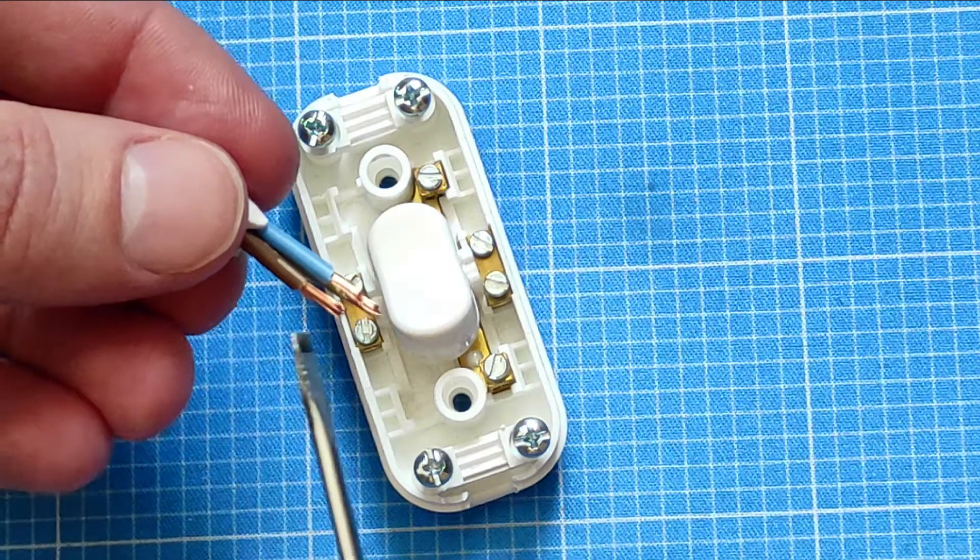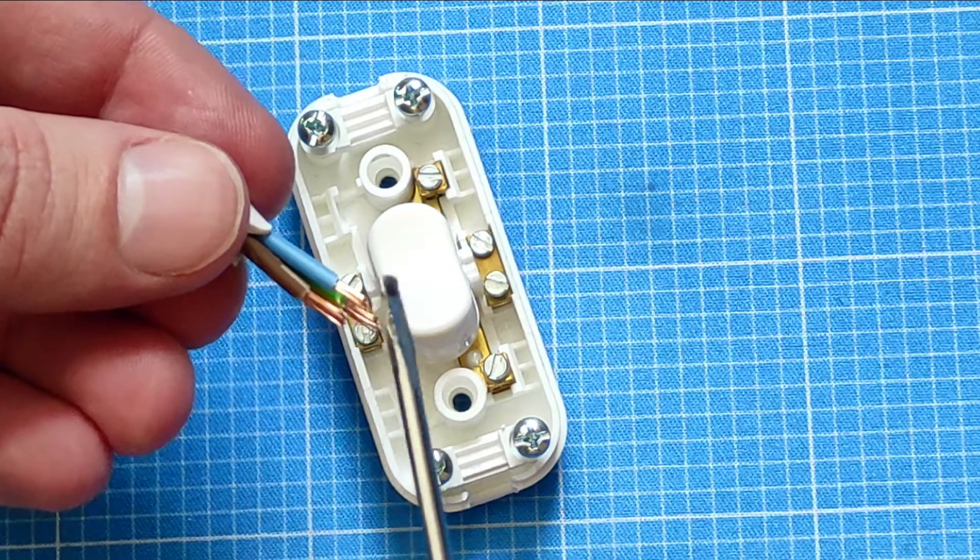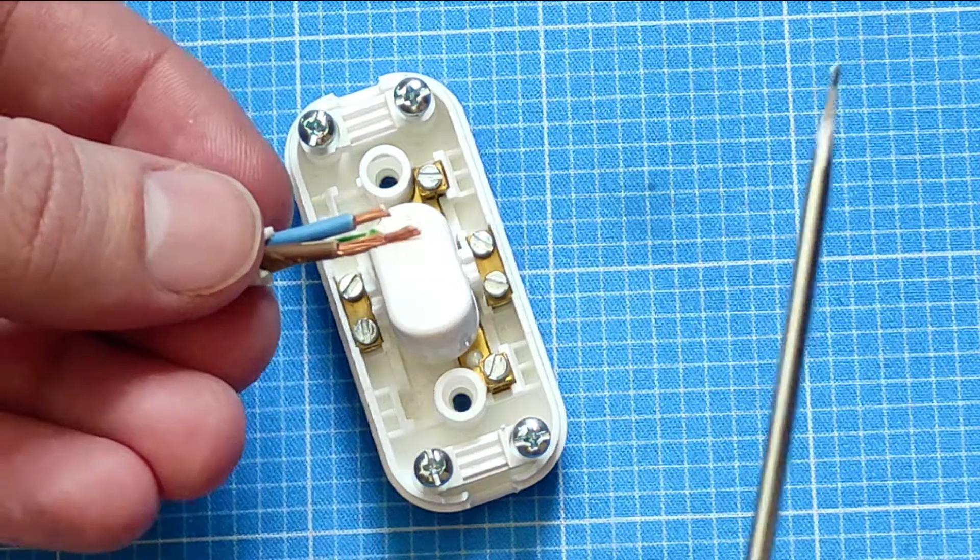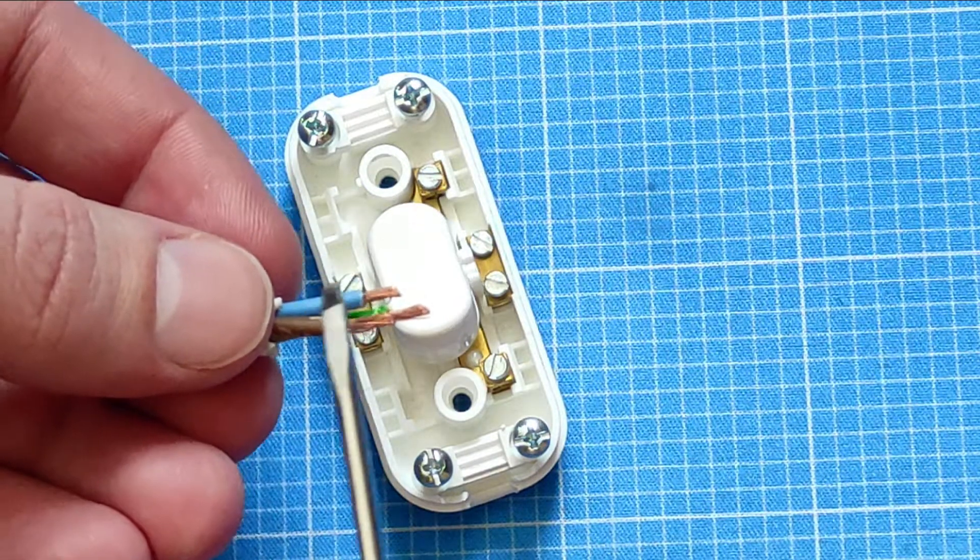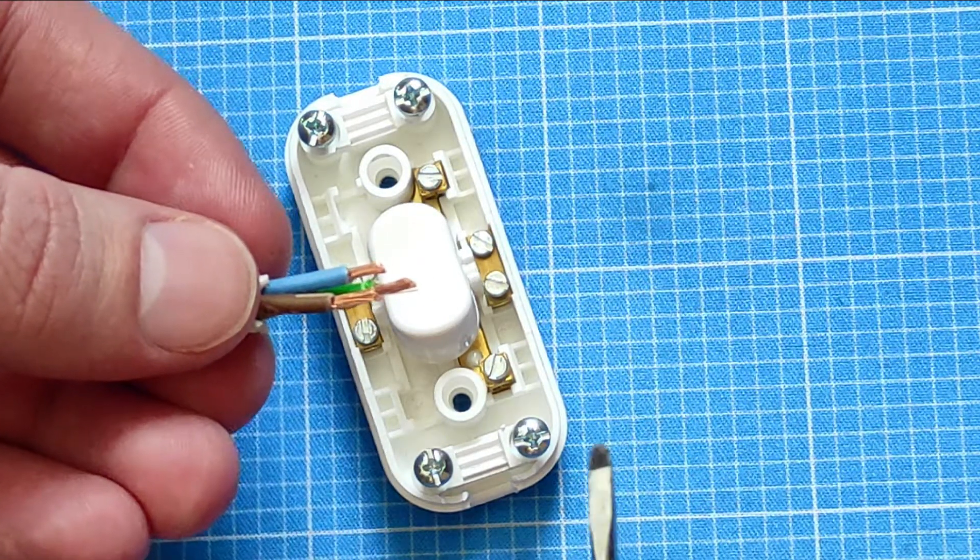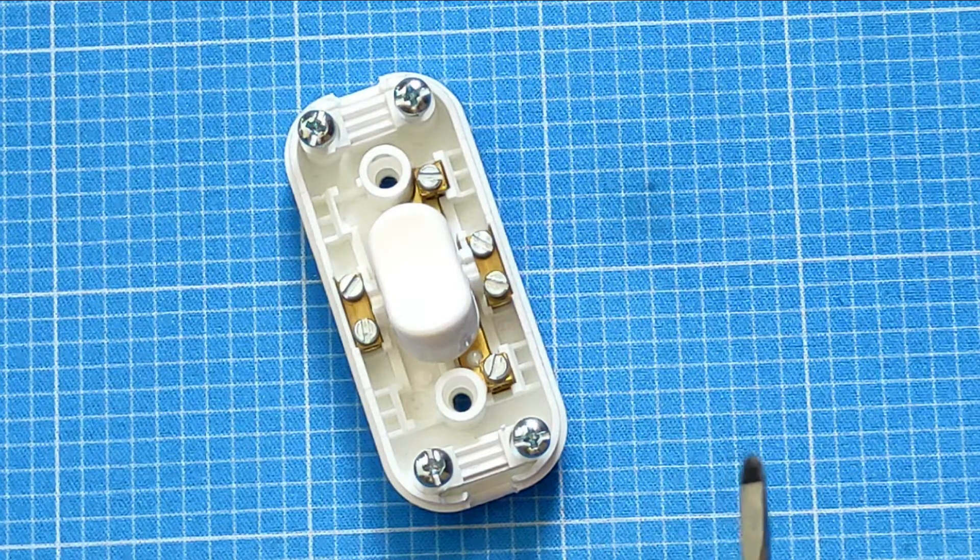This is alternating current, so the live one powers, but it switches back and forth between the live and the neutral, the blue and the brown, 60 or 50 times per second.